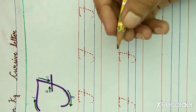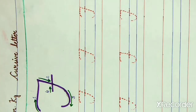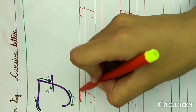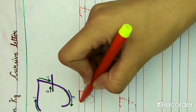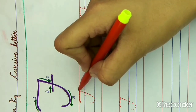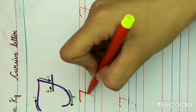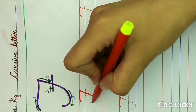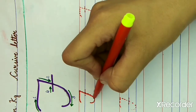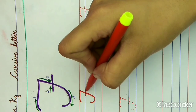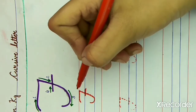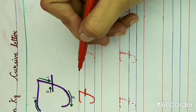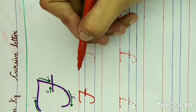Hold your pencil like this. Now put your pencil on the red line. Draw a curved line. What do we need to do first? Red line — a small curved line. Second line is slanting line. Third line is small semicircle. Fourth line is slipping line. What is this? Letter F. F for fish. What is the spelling of fish? F-I-S-H. Fish.